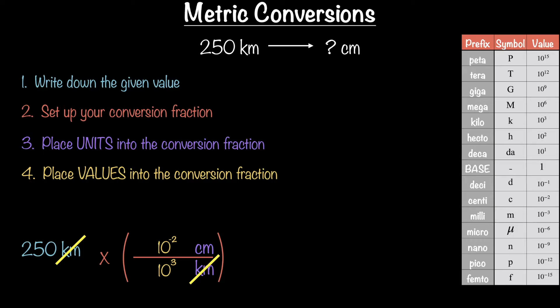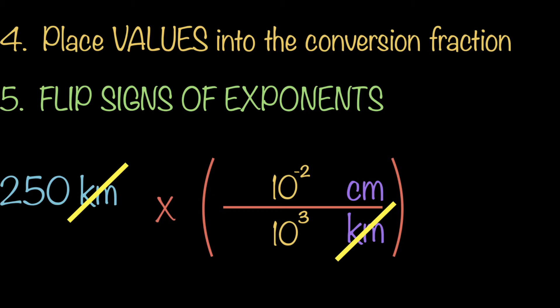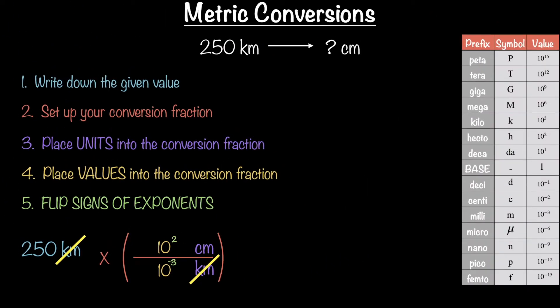Step five — the most important step — flip the signs of the exponents. Take the kilometer exponent value of positive 3 and flip it to negative 3. Take the centimeters exponent of negative 2 and flip it to positive 2. Now all you need to do is calculate: plug in 250 times 10 raised to the positive 2, then divide by 10 raised to the negative 3.